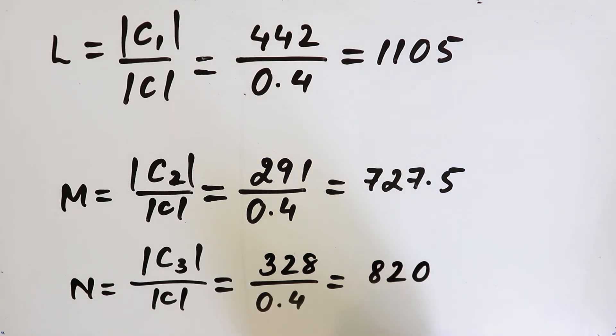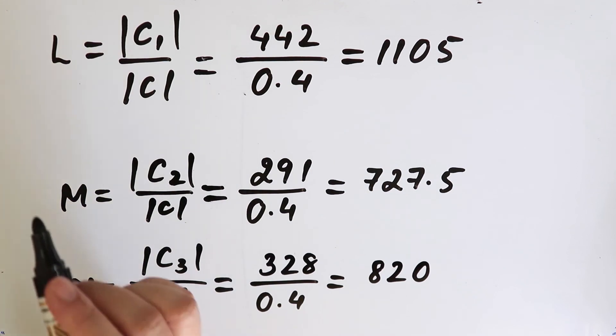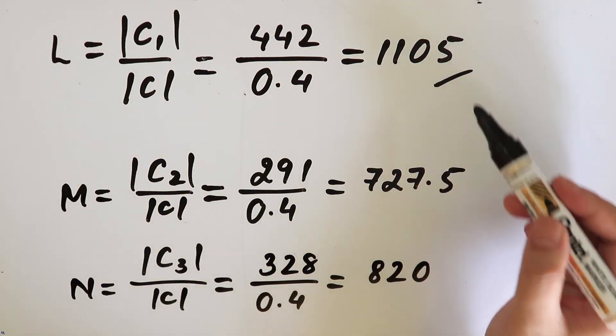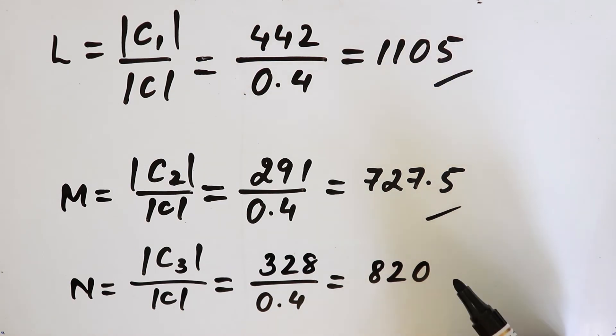Therefore, the output that should be produced by the three industries to meet the total demand is 1,105, 727.5, and 820 respectively for industry L, M, and N.